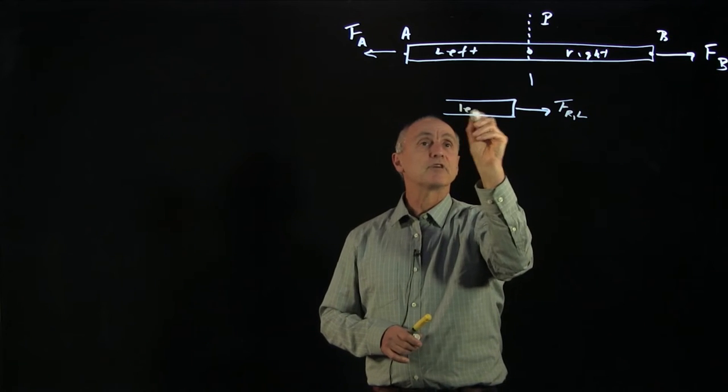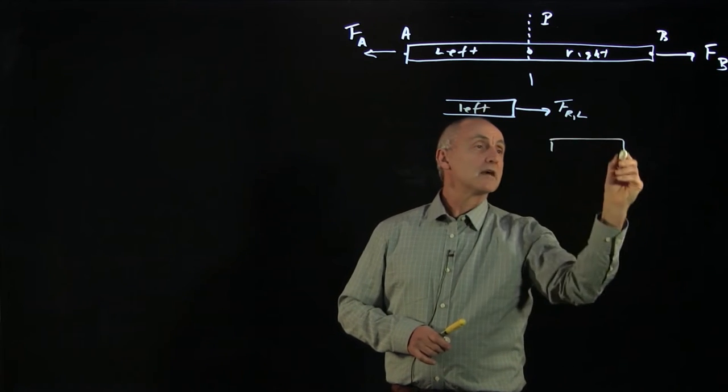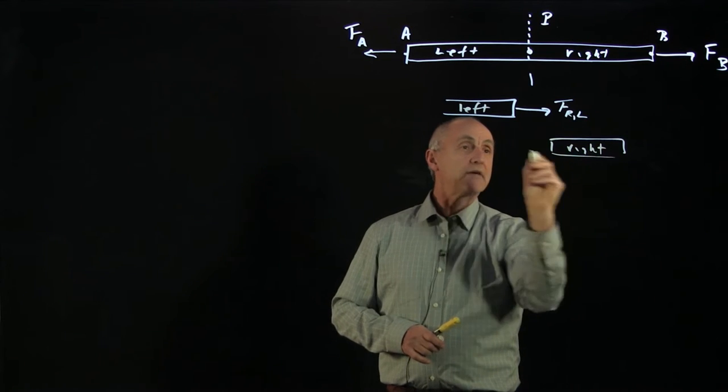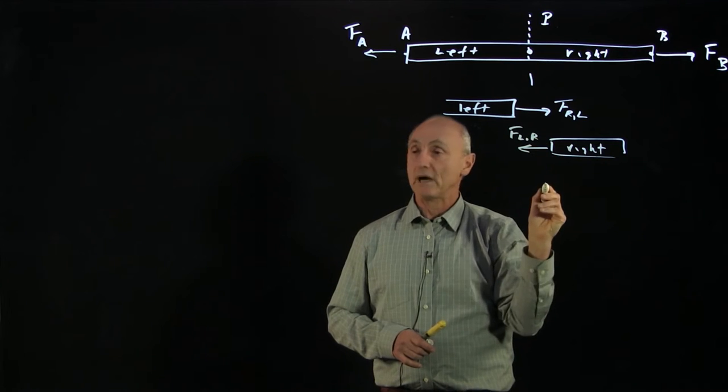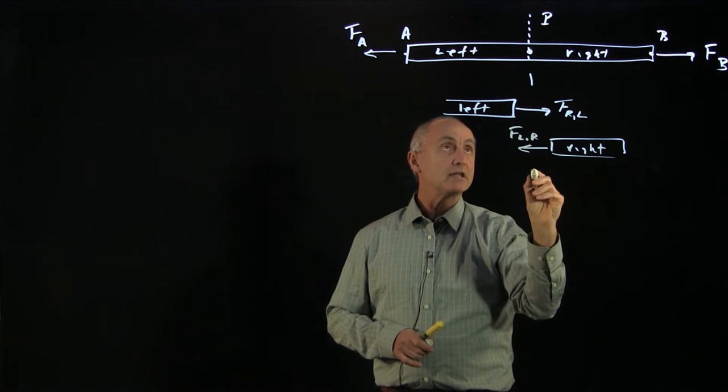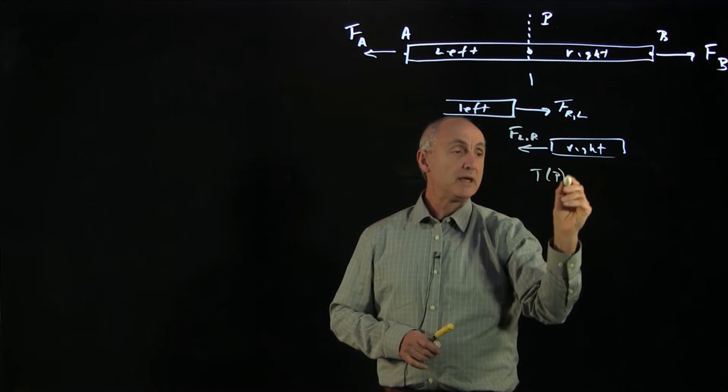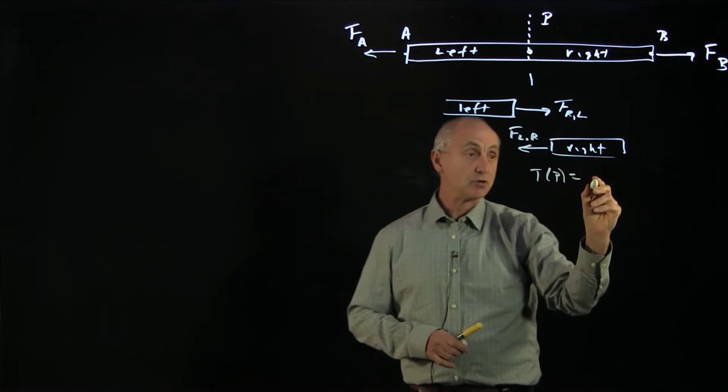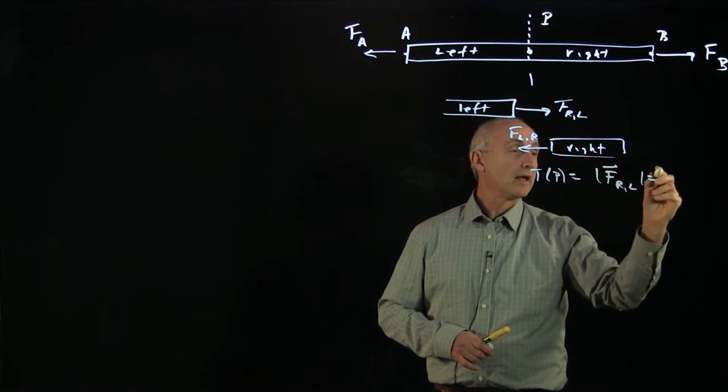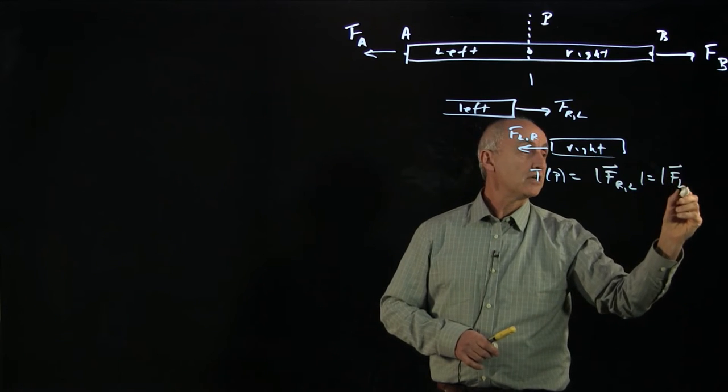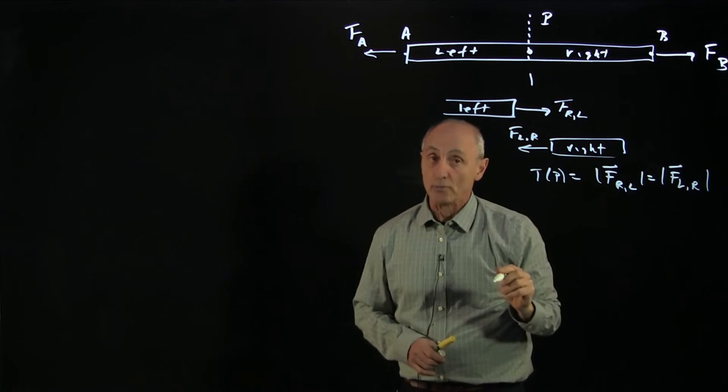And this is the left side. And the right side is being pulled by the left side. So that's the right side being pulled by the left side. And what we define the tension at the point P was to be the magnitude of this action-reaction pair. And that's how we define tension at a point inside a rope.